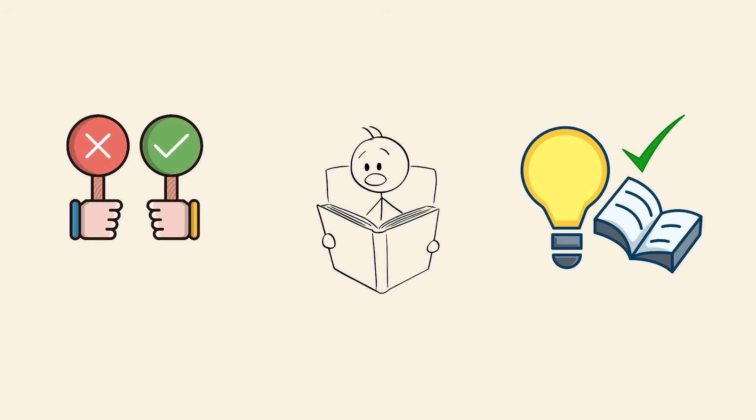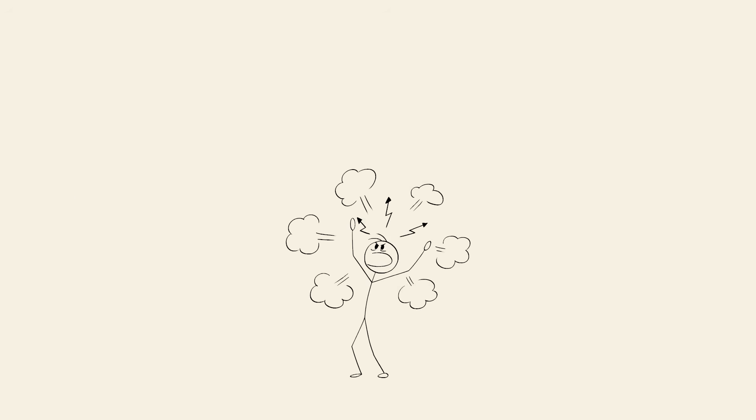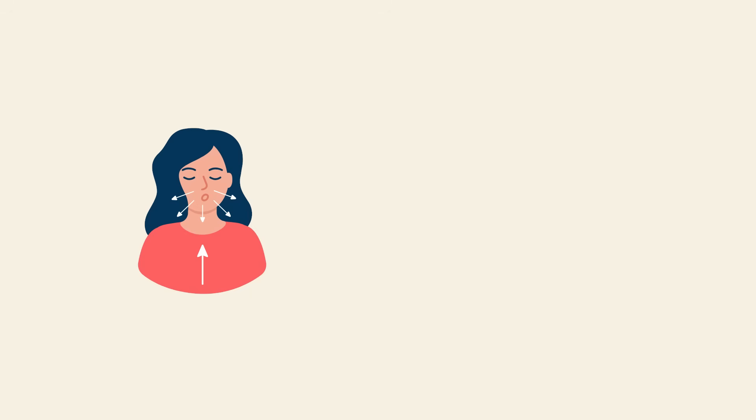One of the most accepted theories is that yawning helps regulate brain temperature. Our brains work best within a narrow range of temperatures, and when they start to overheat due to stress, fatigue, or even boredom, a deep inhalation of cooler air can help cool things down.